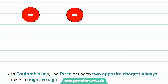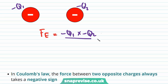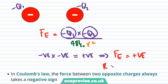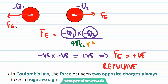For two negative charges with charges minus q1 and minus q2, the electrostatic force is equal to minus q1 times minus q2 divided by 4π epsilon 0 times r squared. Multiplying two negative numbers together gives a positive result, so the electrostatic force Fe is again positive. This represents a repulsive force, because it acts to separate the two alike charges. Therefore, a repulsive force is always represented by a positive sign in Coulomb's law.